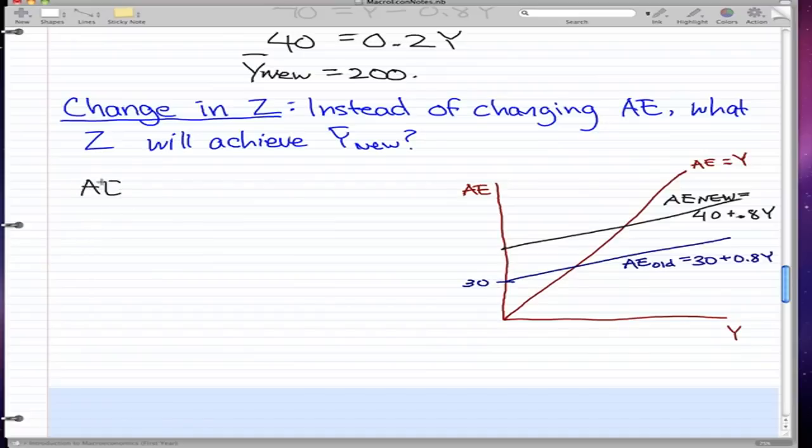So, we have AE equals Y, like we usually start off with, and we make AE equals AE0 plus ZY equals Y. Now, we want Y to be 200, and we want to keep AE the same. So, we want Y to be 200, and we want AE not to be the same, so the only thing we can really change is Z.